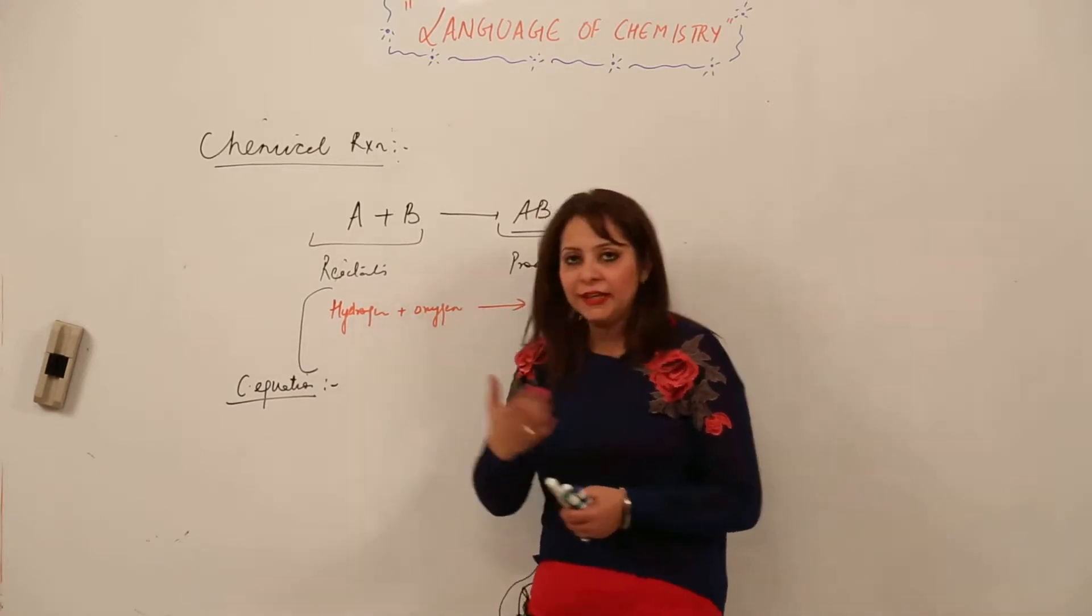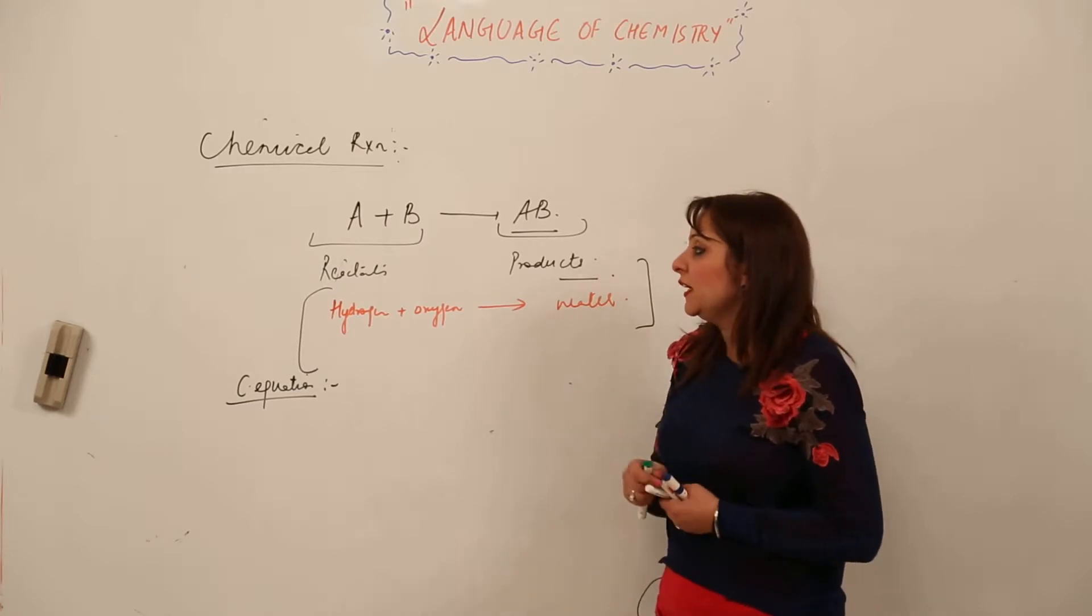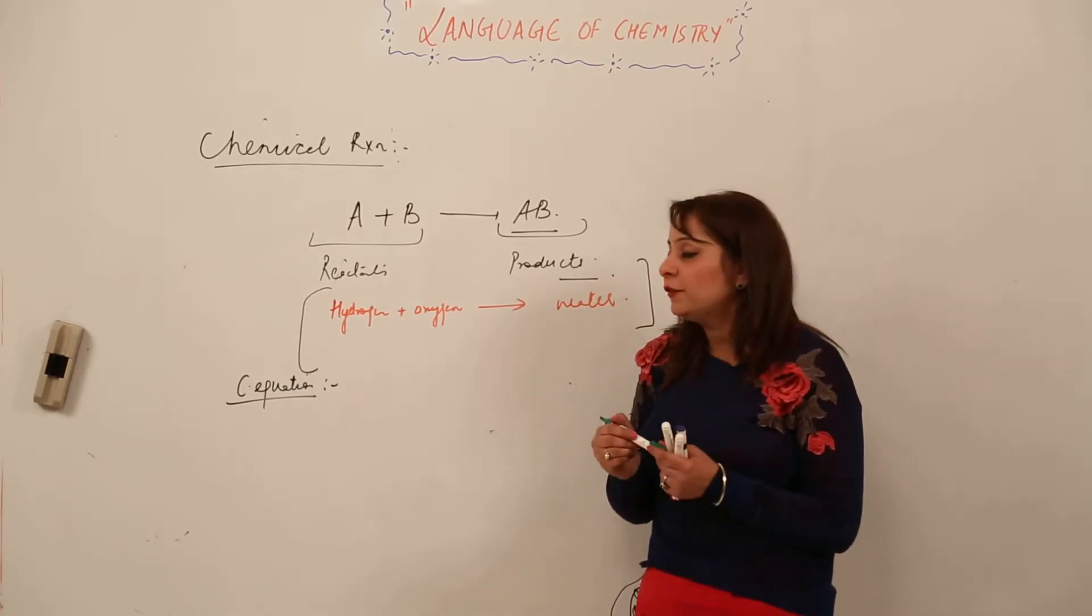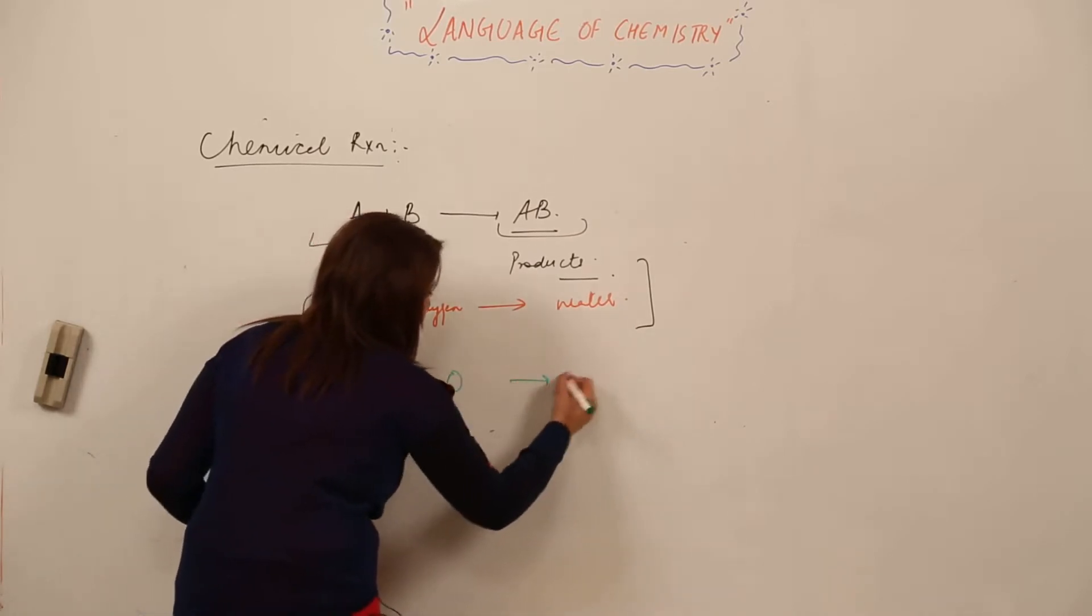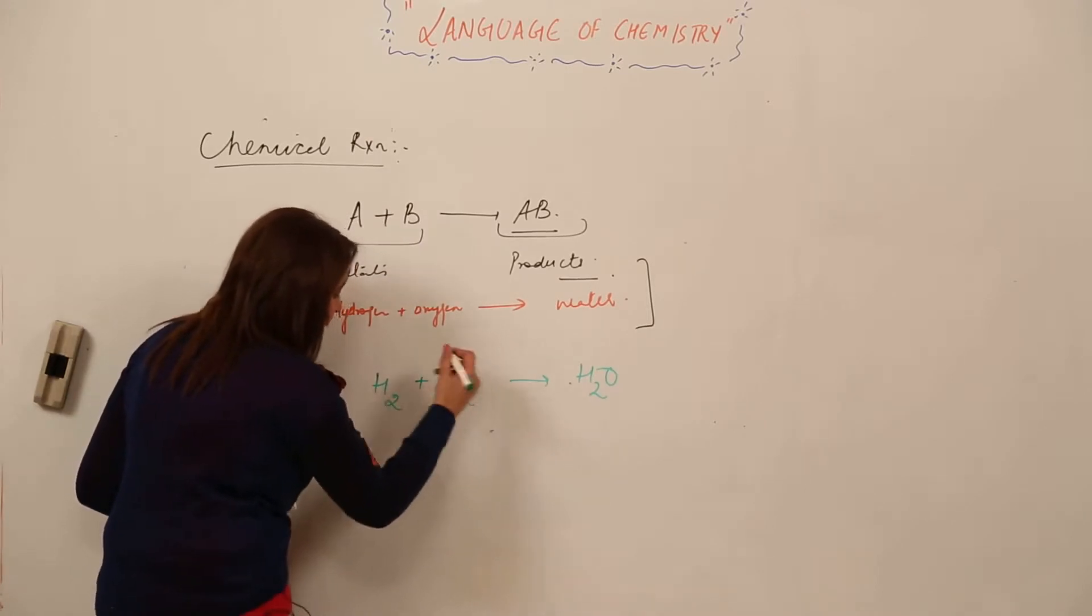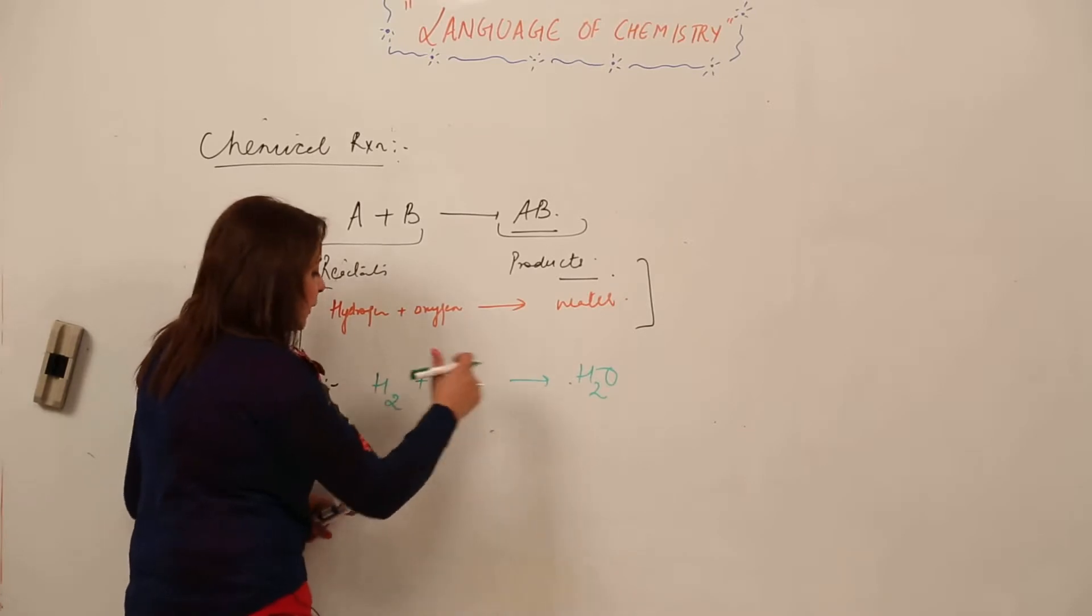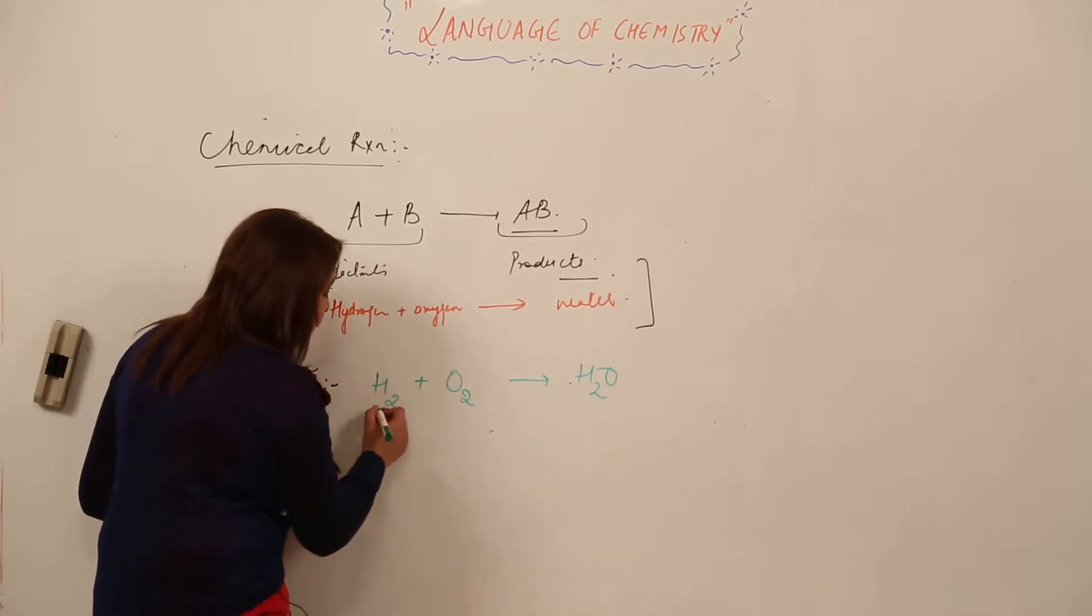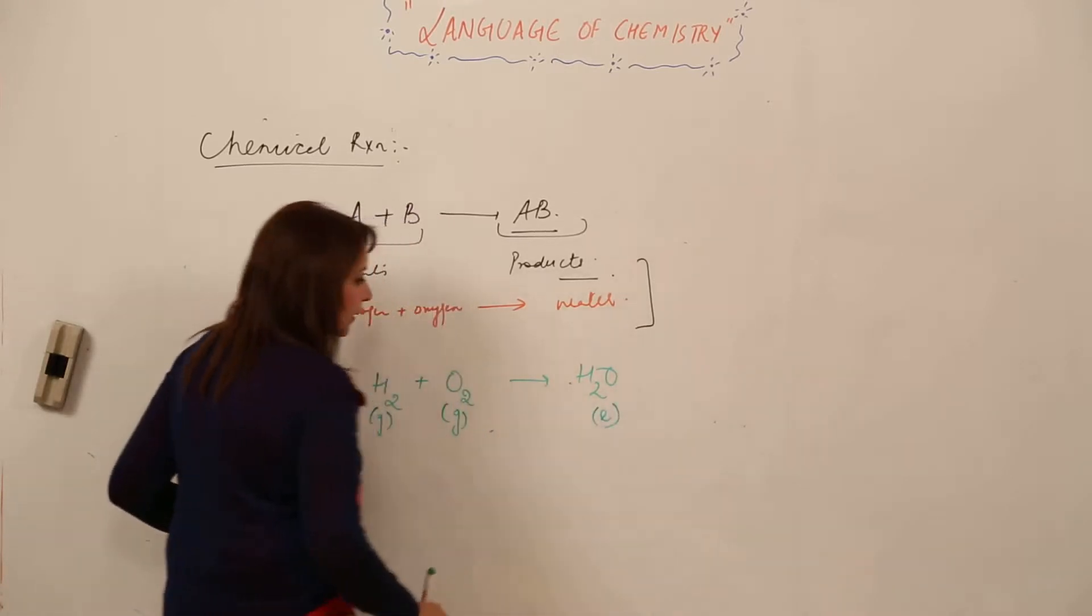How can we make it more informative? We use the symbols and molecular formulas. I specify the atomicity as well—how they occur in nature. I'm also writing the states: hydrogen occurring at room temperature as gas, oxygen as gas, and water as liquid.